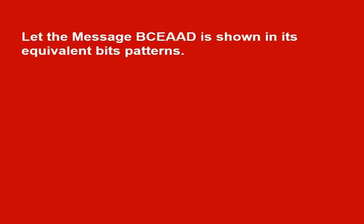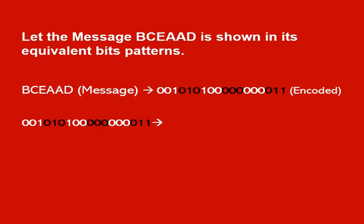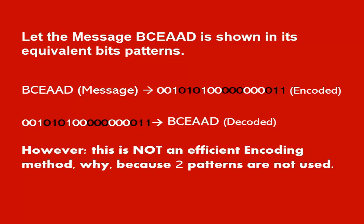Let the message BCEAAD be shown in its equivalent bit patterns. Converting source message into bits is called encoding. Decoding is just the opposite process. However, this is not an efficient encoding method. Why? Because two patterns are not used.